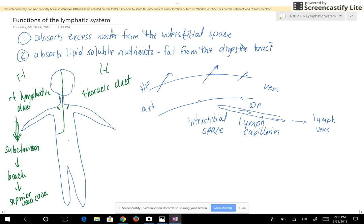So the thoracic duct will empty into the subclavian vein, brachiocephalic vein, and into the superior vena cava.